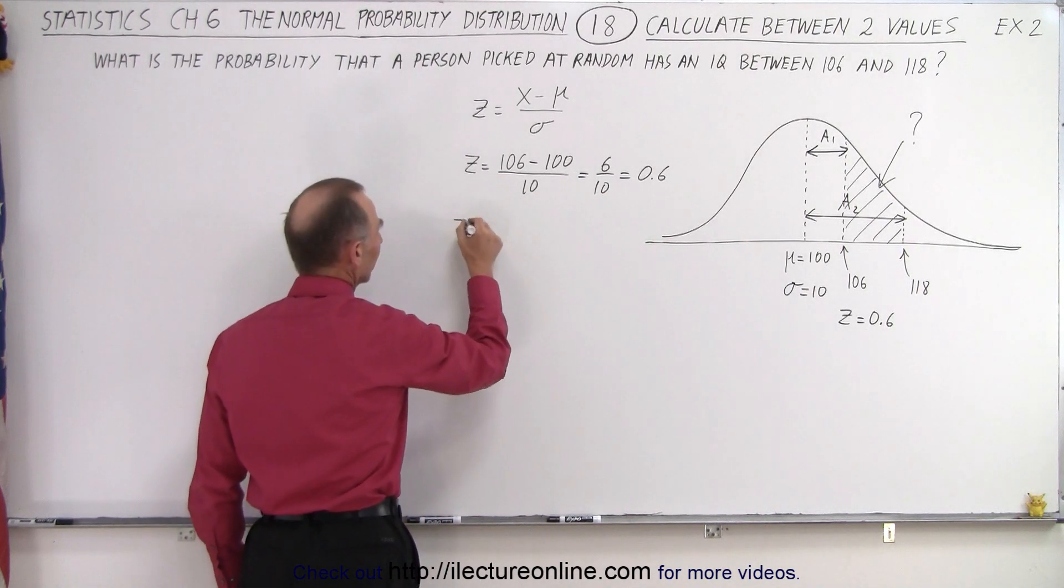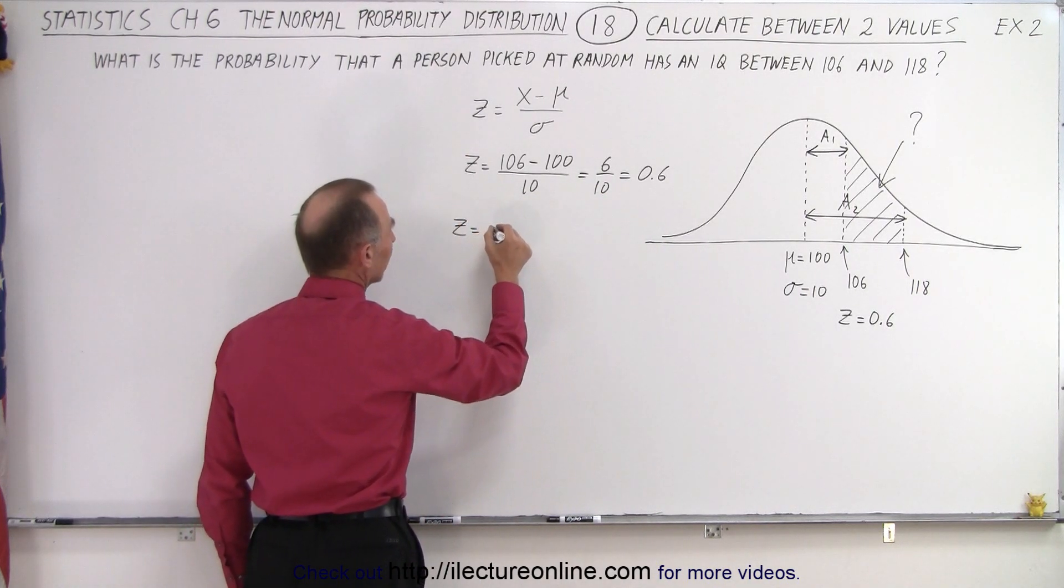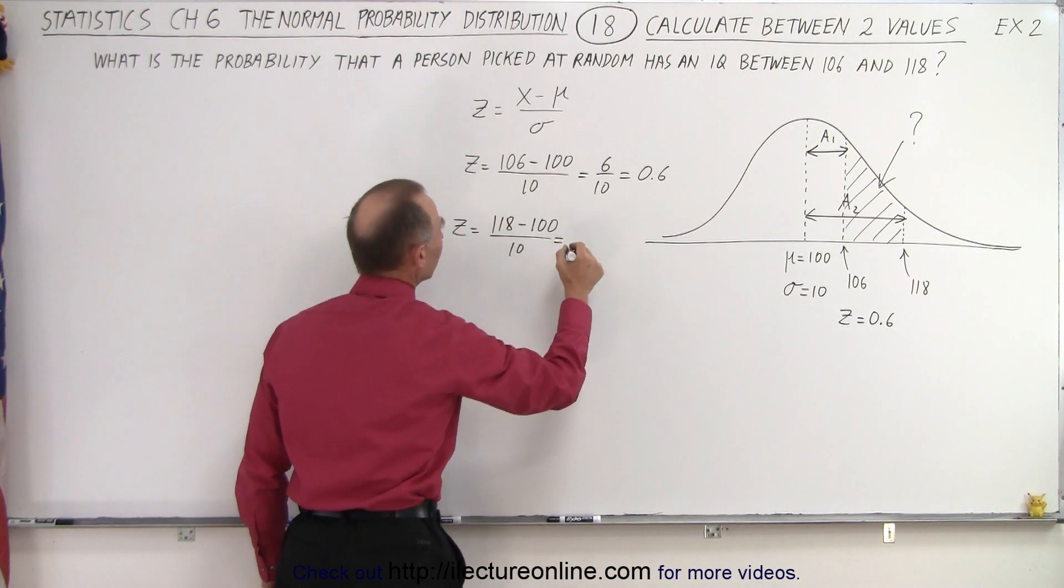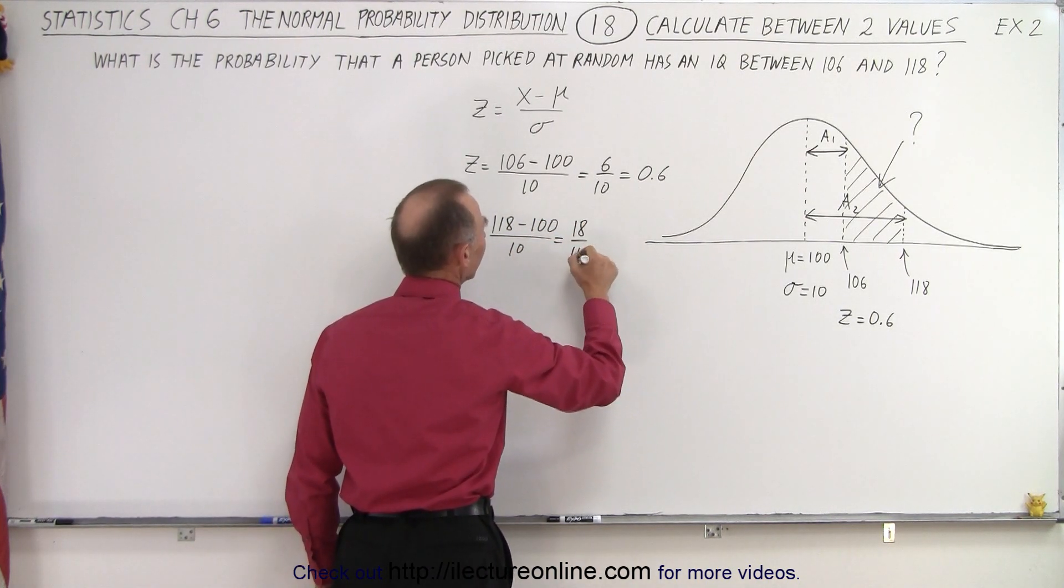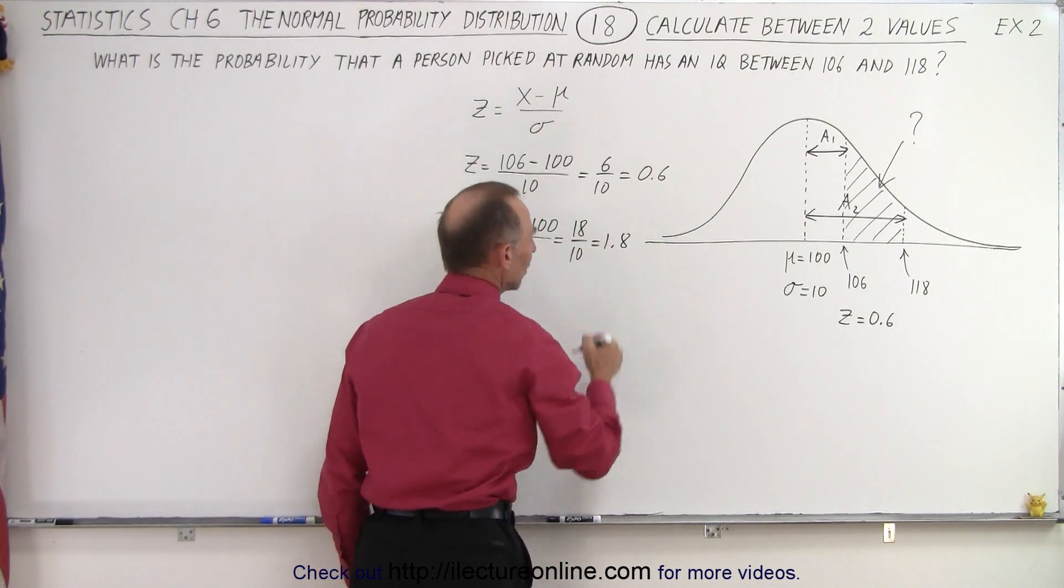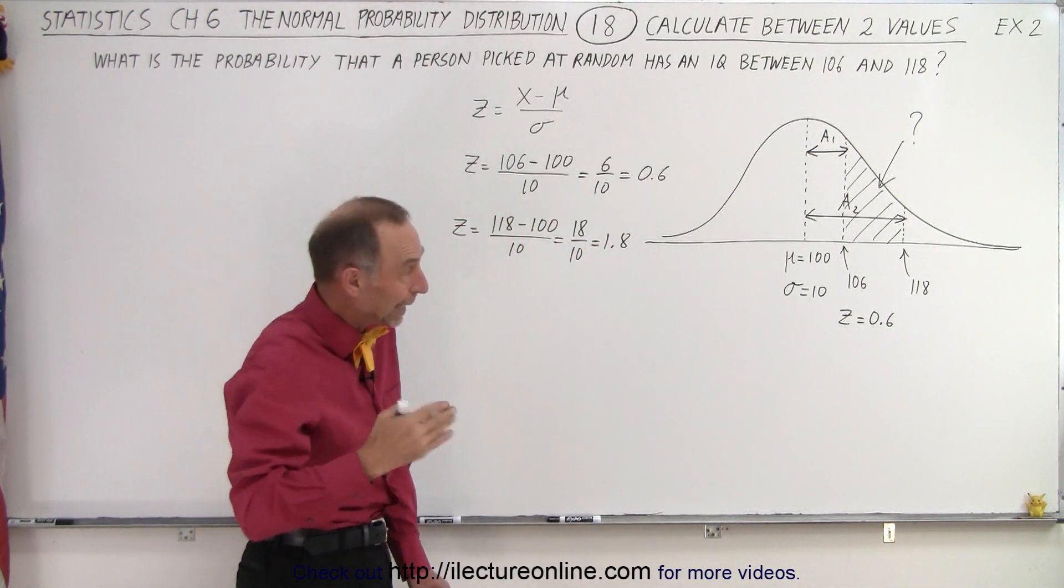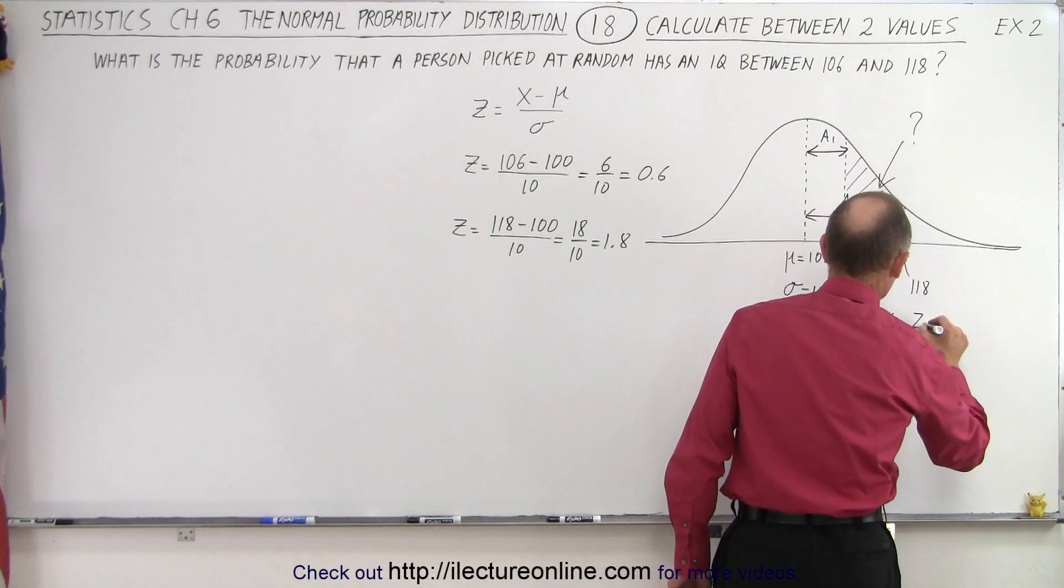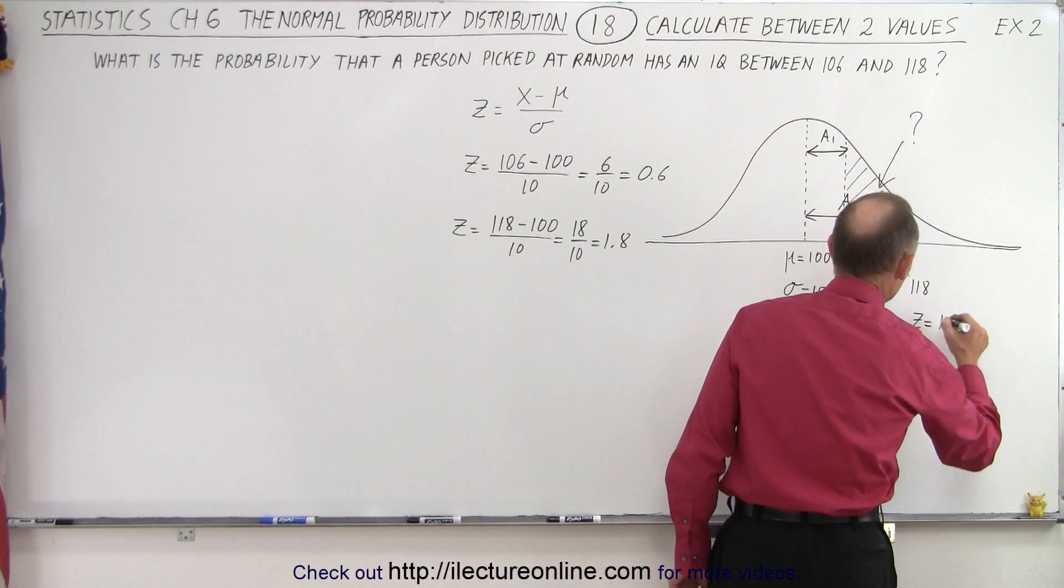The second one: z is equal to 118 minus the mean of 100 divided by sigma which is 10. That gives us 18 divided by 10 which is 1.8. So in other words that means 1.8 sigma to the right of the mean, above the mean, that z equals 1.8.